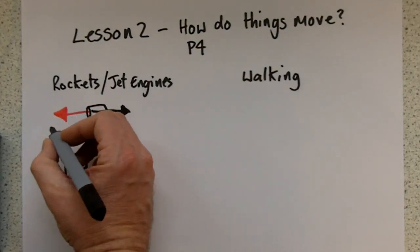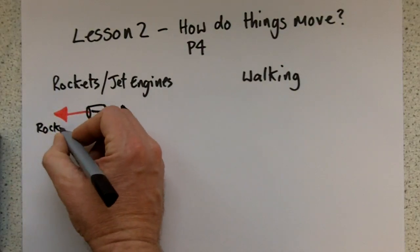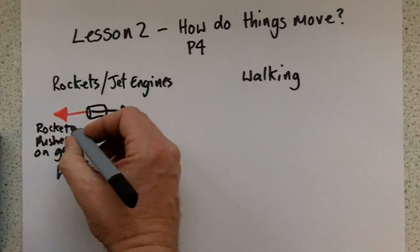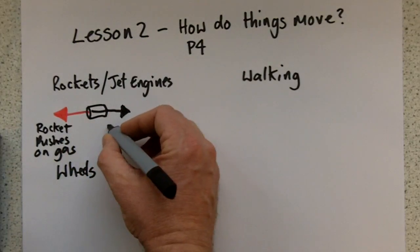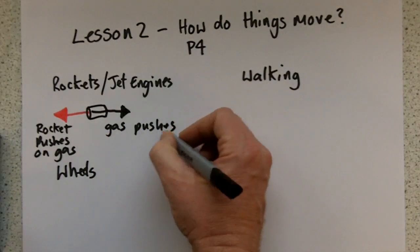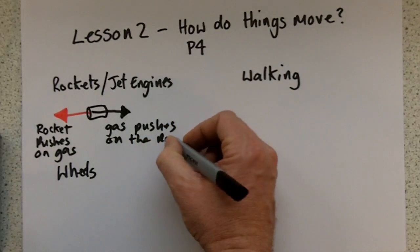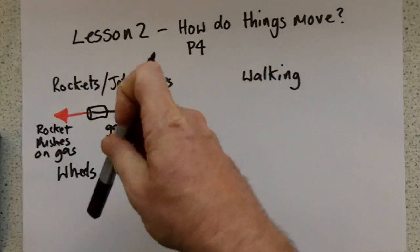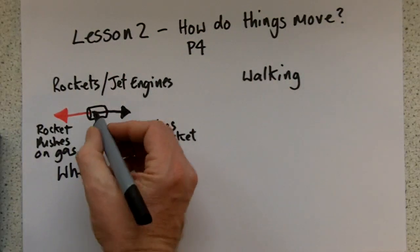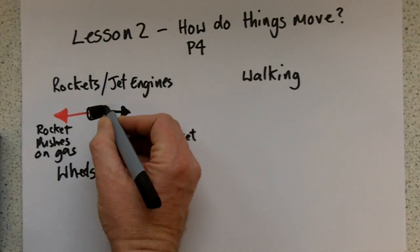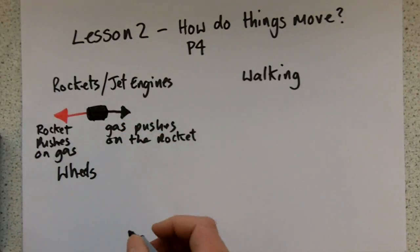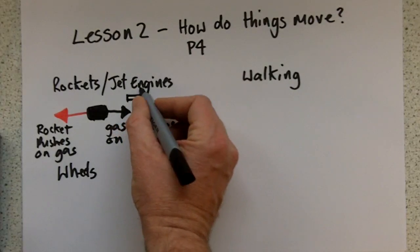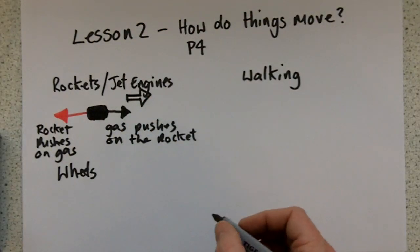The key idea to remember is that the rocket or jet engine pushes on the gas — that's the red arrow. And therefore, because of the idea of interaction pairs, the gas pushes on the rocket. It's an example of an interaction pair force. It doesn't matter if it's flying horizontally like in a jet engine, or vertically in a rocket engine. The engine applies a large force, pushes hot gases out, and in reciprocation, the gas pushes on the rocket, so the rocket or jet engine ends up moving forward.